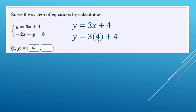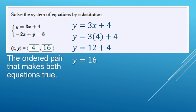Let's use that where x is 4. Pull in the replacement again or substitution. 3 times 4 plus 4, 12 plus 4 makes 16. So 4, 16 is the ordered pair that makes both equations true.